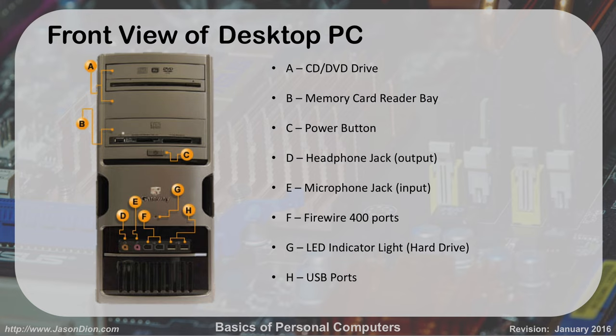You can see the CD/DVD drive at the top. Going down to B, there's a memory card reader bay where you can insert cards from digital cameras. We have the power button at C. Going down to D is the headphone jack; the pink one next to it is the microphone jack. Next to that are the D-shaped firewire ports. We have USB at H, which you're probably very familiar with. And indicator light G is for the hard drive — whenever the hard drive is being accessed, you get that blinking red light.